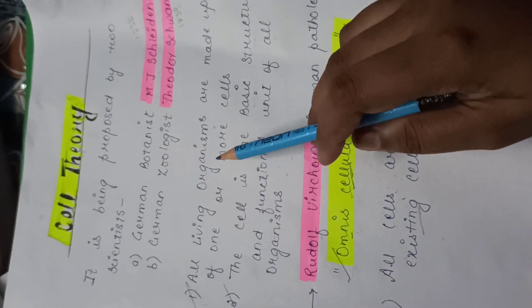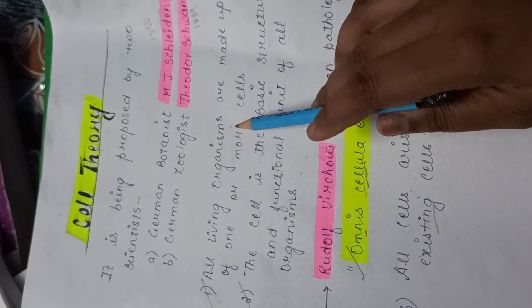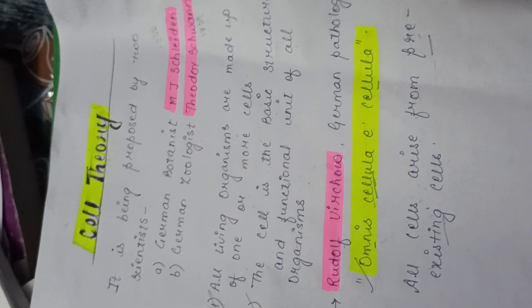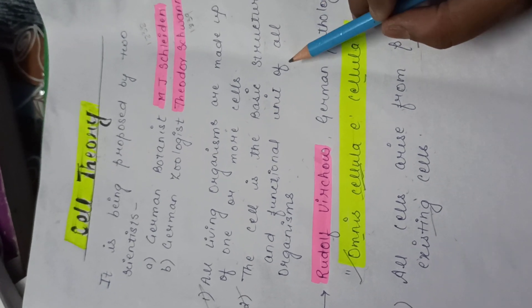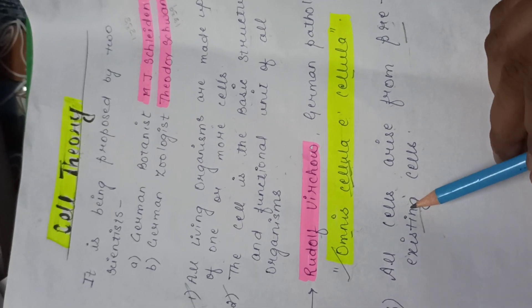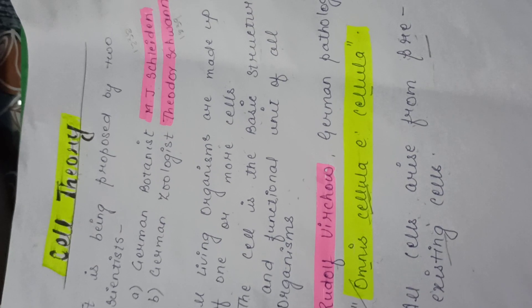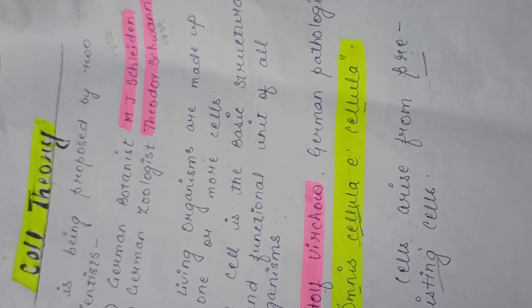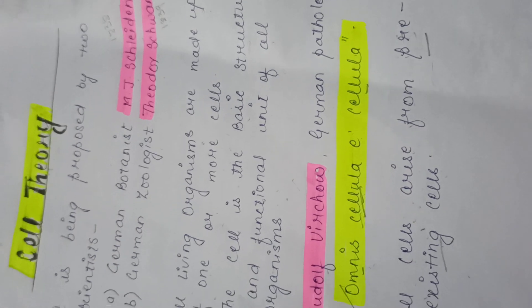So students, we have studied three important postulates of the cell theory: first, all living organisms are made up of one or more cells; second, the cell is the basic structural and functional unit of all living organisms; and third, all cells arise from pre-existing cells. We can conclude that a cell is the structural and functional unit of all living organisms, capable of existing independently and performing all the basic and essential functions of life.